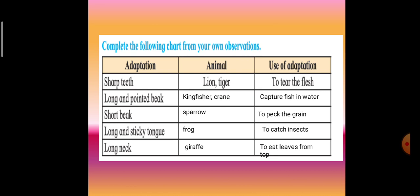Long and pointed beak: kingfisher, crane. Why? So that they can capture fish in water. Short beak: you can see in sparrow, because it has only to peck the grain. Long and sticky tongue: it is present in frog, even in household lizard. Why? So that it can catch the insects.